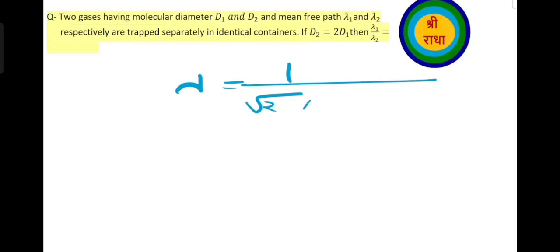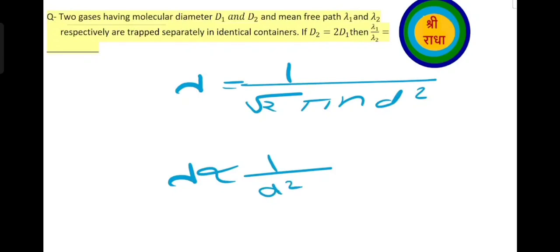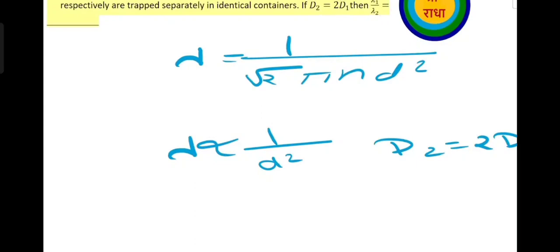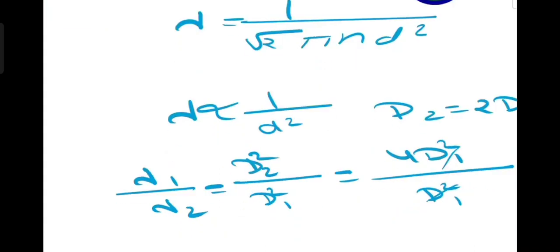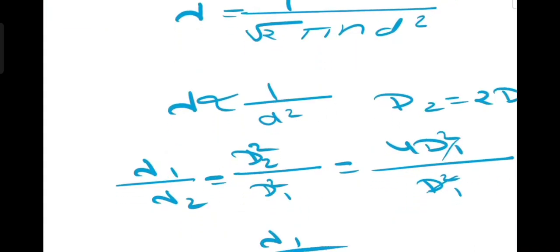Mean free path is proportional to 1 by root 2 pi d squared. So we know that lambda is inversely proportional to d squared. Given d2 is equal to 2d1, so lambda1 by lambda2 equals d2 squared by d1 squared. Since d2 equals 2d1, we get 4d1 squared by d1 squared, which cancels to give lambda1 by lambda2 equal to 4.